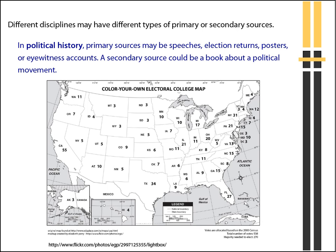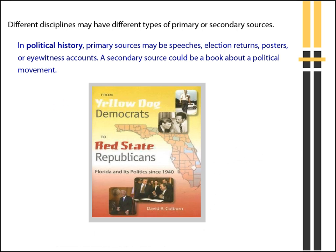In political history, primary sources may be speeches, election returns, posters, or eyewitness accounts. A secondary source could be a book about a political movement.